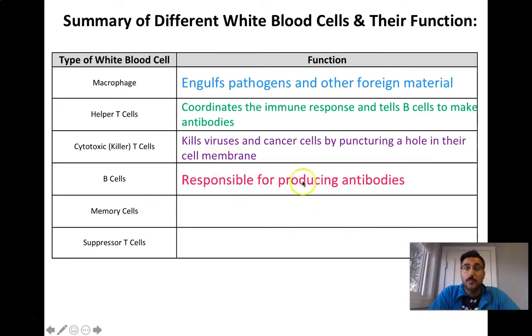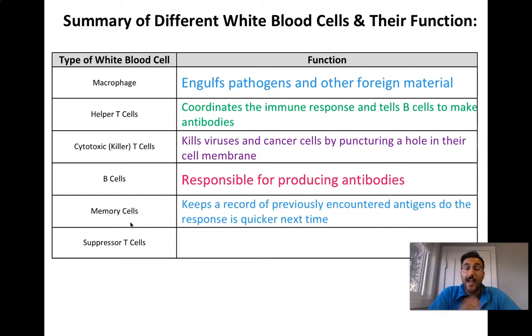B cells are responsible for producing antibodies. So when you hear the word B cells, think antibodies, B for bodies, antibodies. Memory cells are going to keep a record of previously encountered antigens on pathogens so that there's a quicker immune response the next time the body might come into contact with that pathogen.